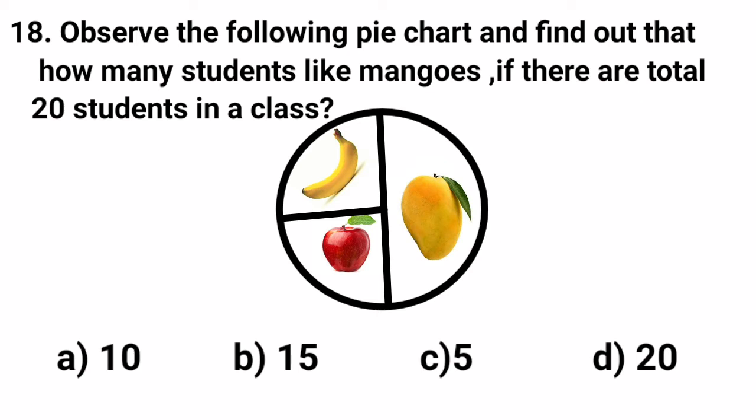We know that the total students are 20 and the number of students who like banana are one-fourth, means fourth part of 20. That's 20 divided by 4, that is equal to 5 students. In same way, number of students who like apple are also one-fourth, means 5 students are there. In same way, how many students like mango? Yes, the students who like mango are half. That's 1 by 2. So, half of 20 is 10. So, 10 students like mangoes. So, which is the right answer from the given options? Yes, it's option A, 10. So, let's take option A.